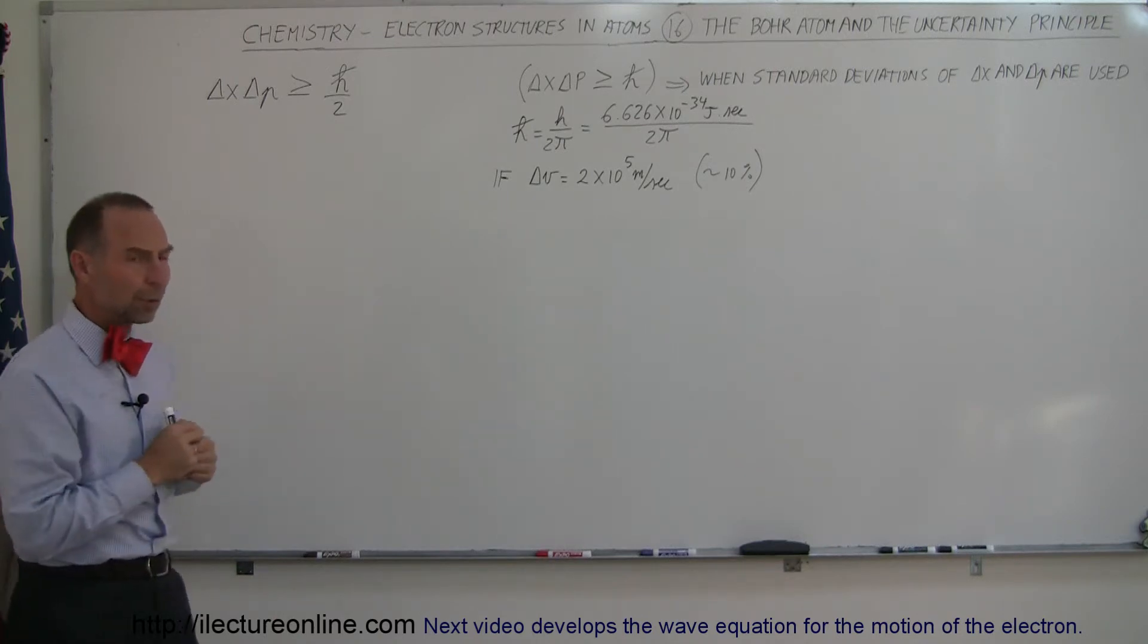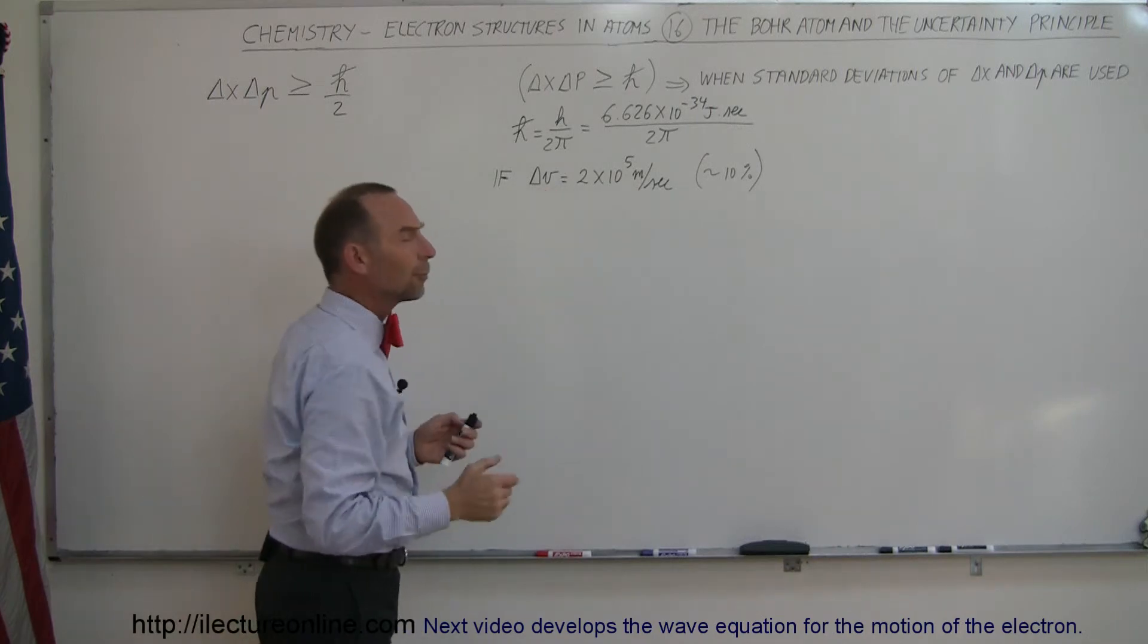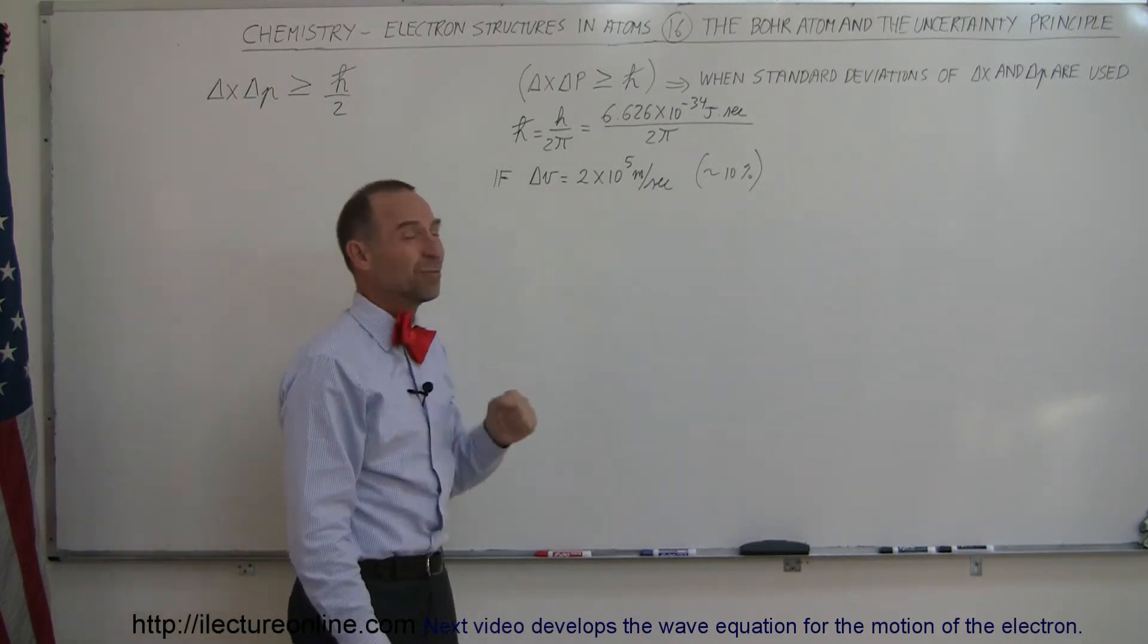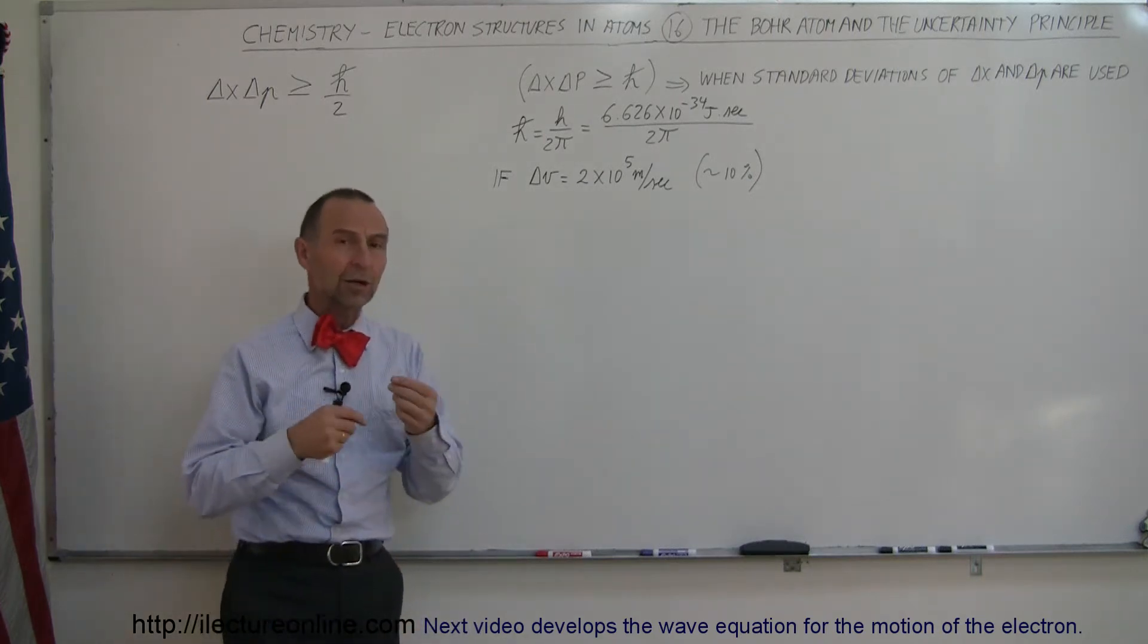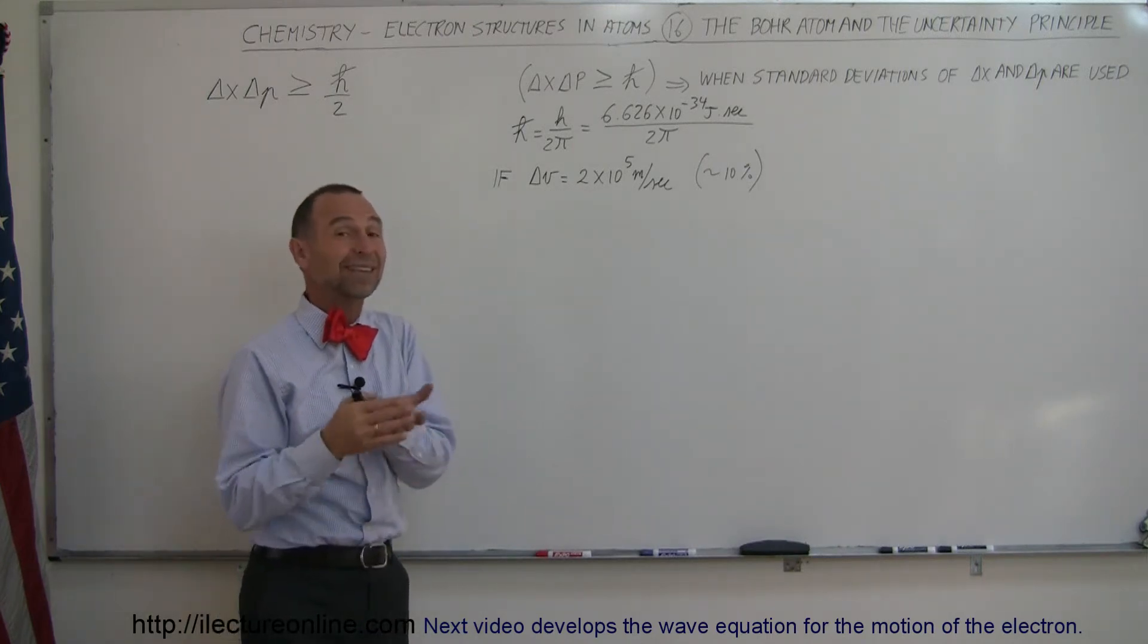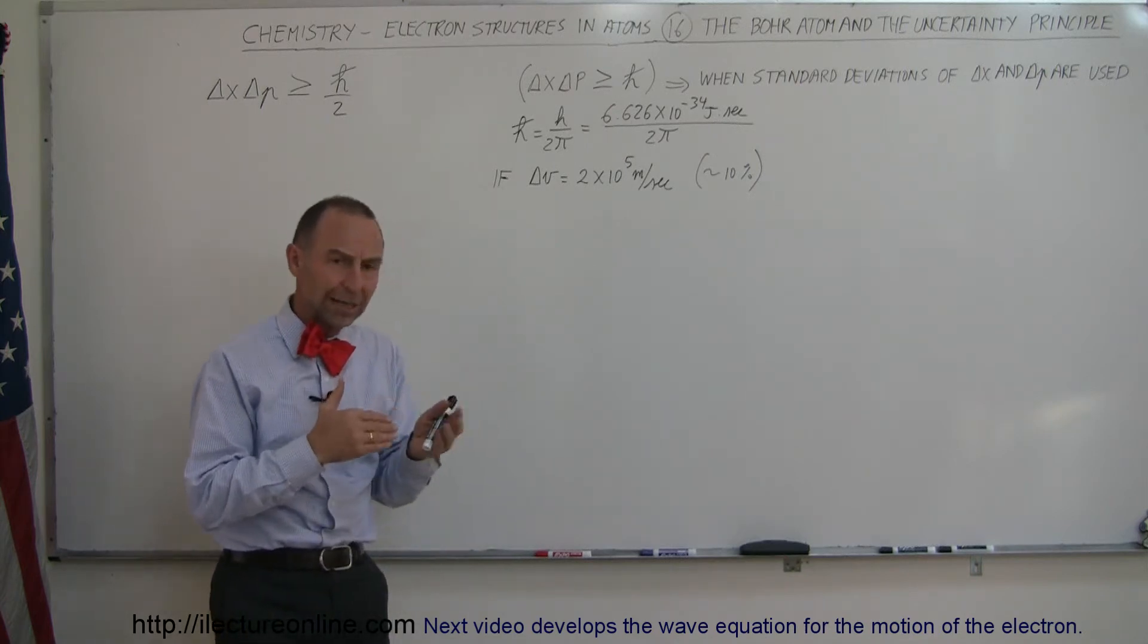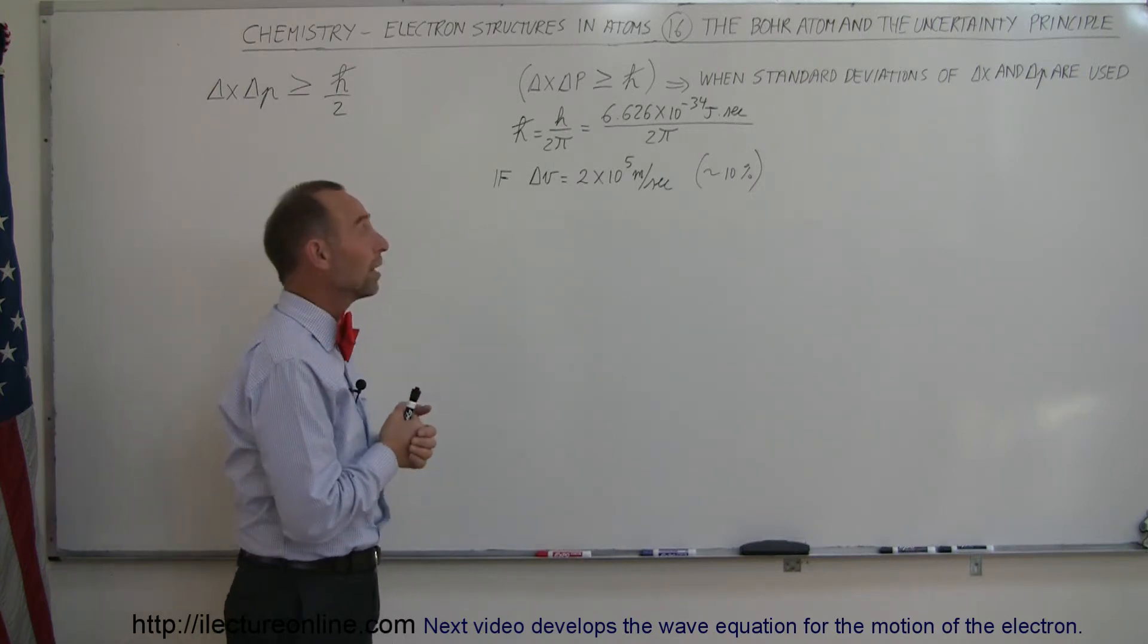So in this example, we're going to show if the uncertainty in the velocity of the electron. Now in the last video we saw that the electron had a speed of roughly 2 times 10 to the 6 meters per second, about 2,000 kilometers per second. Let's say that we had an uncertainty in that velocity in such a way that it was 2 times 10 to the 5 meters per second, about 10%.